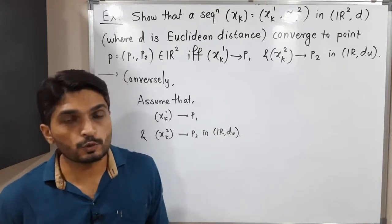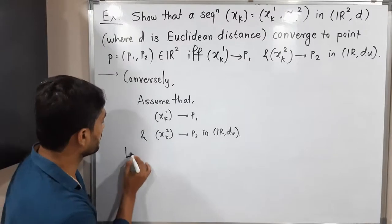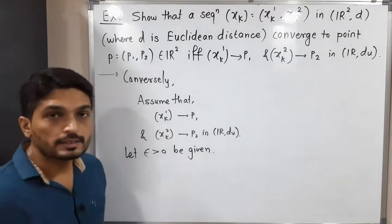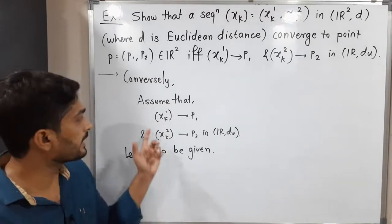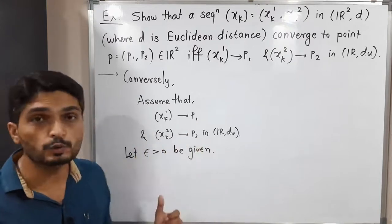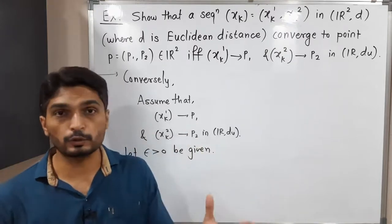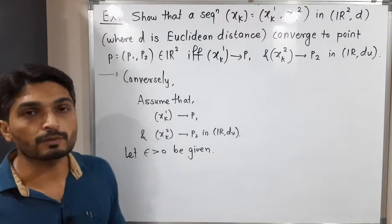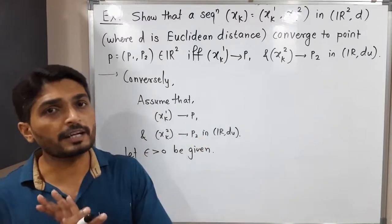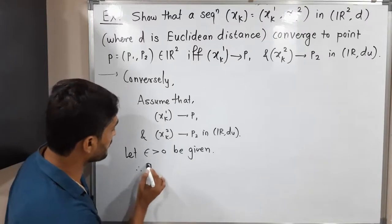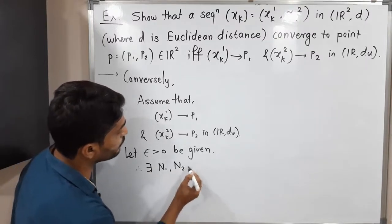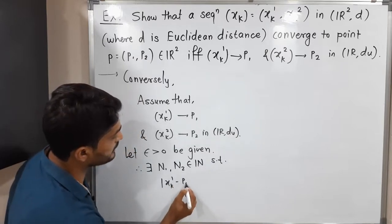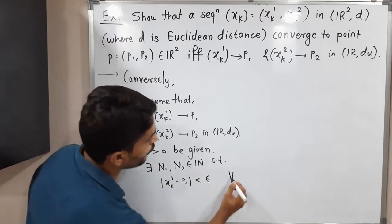Again using the epsilon definition, let epsilon greater than zero be given. Using the given information: since xk1 converges to p1, for this epsilon there will be some natural number N1 such that |xk1 - p1| less than epsilon for all k greater than or equal to N1.